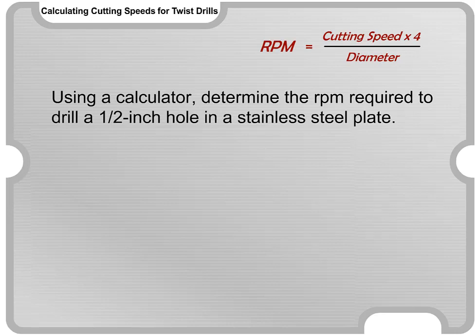Using a calculator, determine the RPM required to drill a one-half inch hole in a stainless steel plate. The final answer is 640.